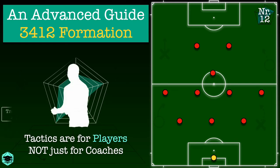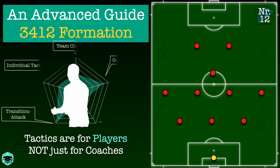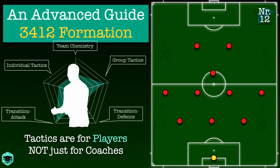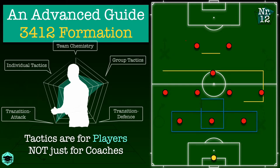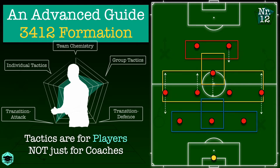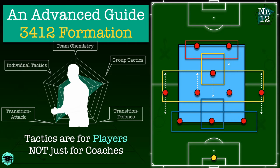The 3-4-1-2 is a recent request received from a number of viewers. This formation is a variation of the 3-5-2 and is interesting because of its flexibility. Moreover, the formation coincides with the recent trend of only placing one player on each wing, thus making it easier to create overloads in the center of the pitch both during attack and during defense.